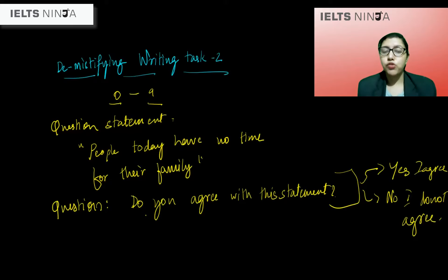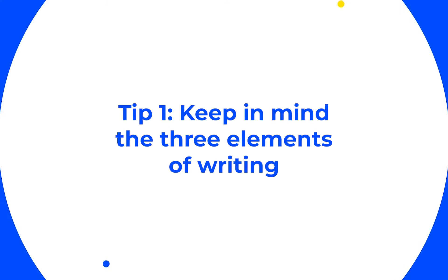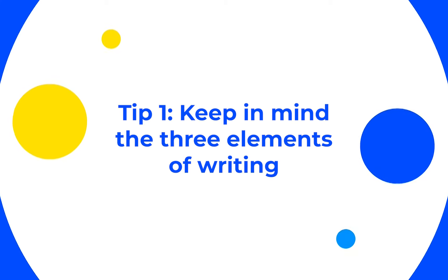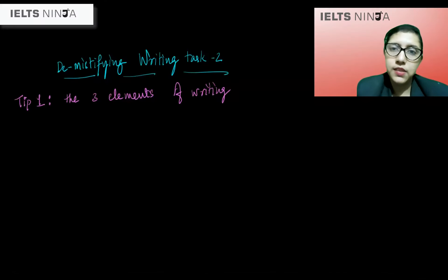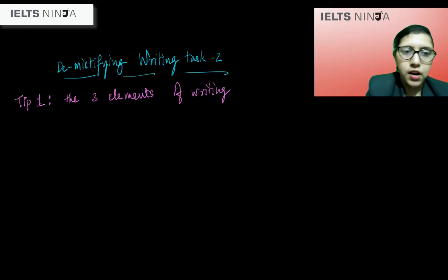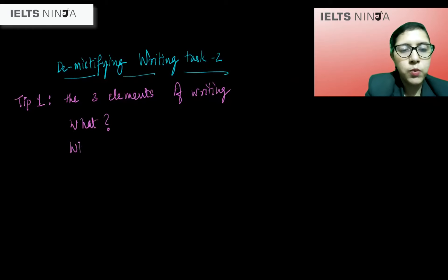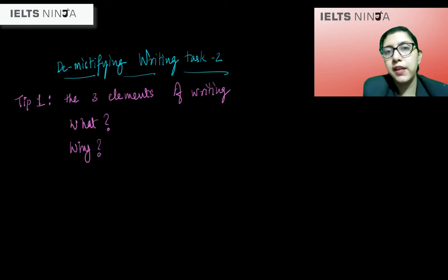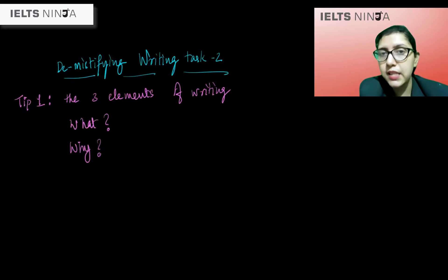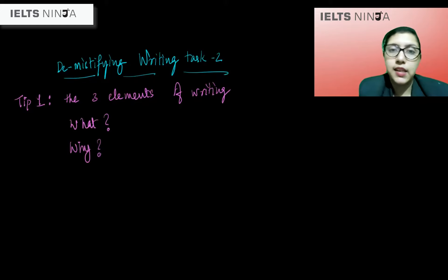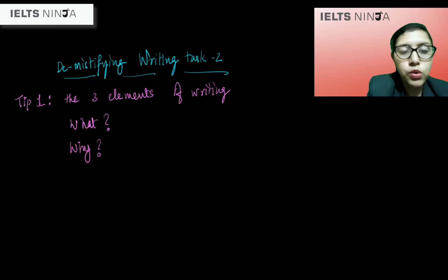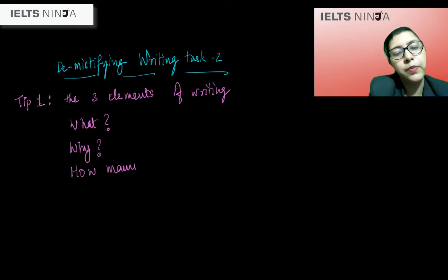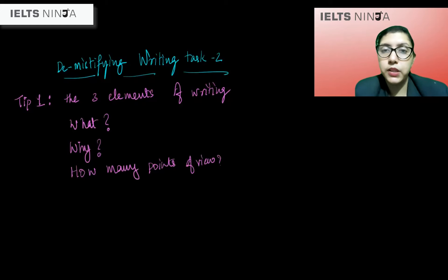This brings us to the first tip for writing task 2. The first tip is to keep in mind the three elements of writing: what are we talking about, why do I feel this way, and how many points of view can I include? For example, if I agree that people today do not spend enough time with their family, I need to substantiate that with why I feel this way and include multiple perspectives in my essay.